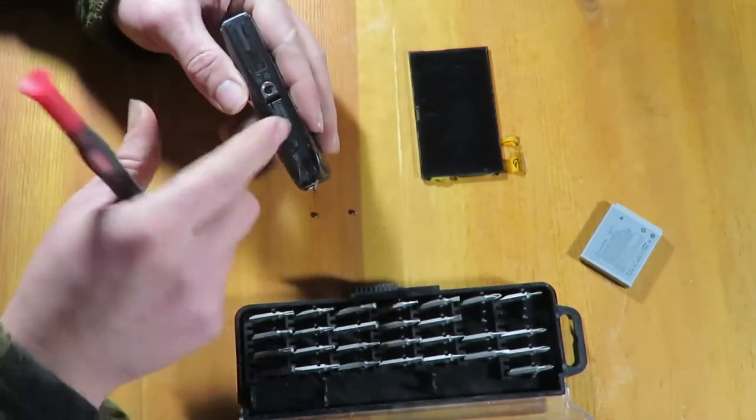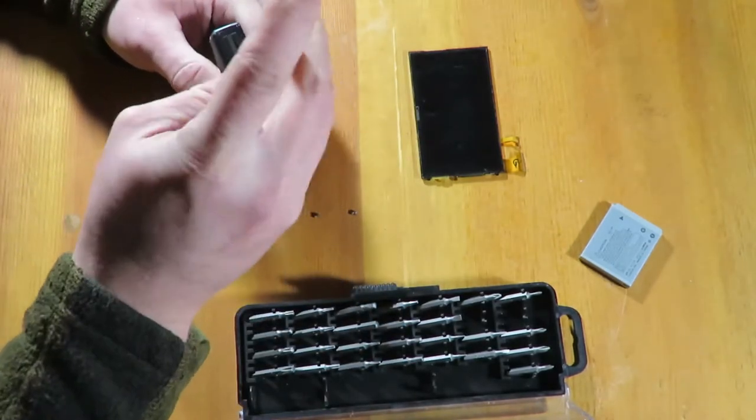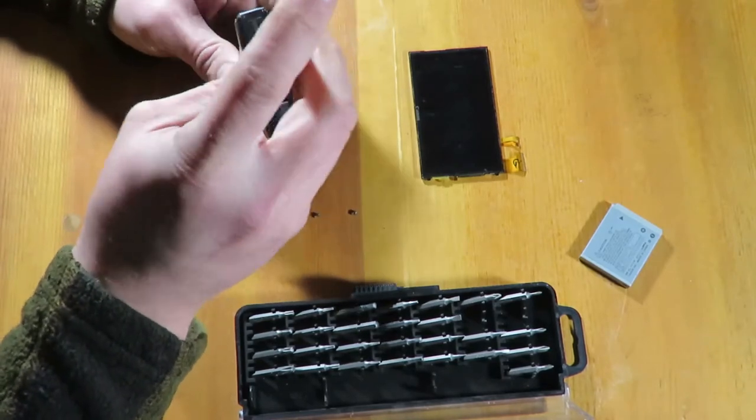There aren't any screws underneath the battery bay. Two on the bottom. And two on each side. Two on the top.